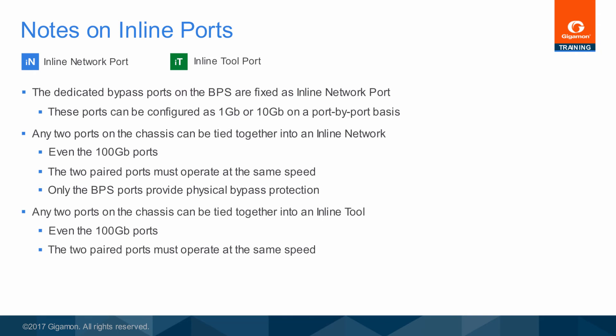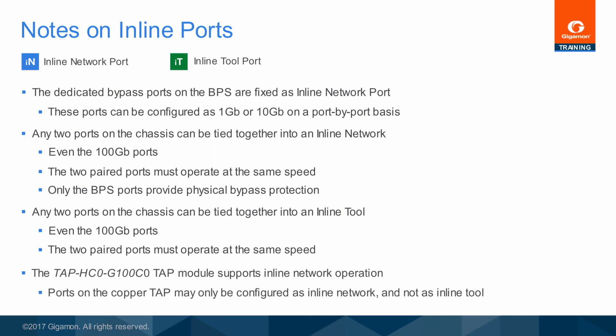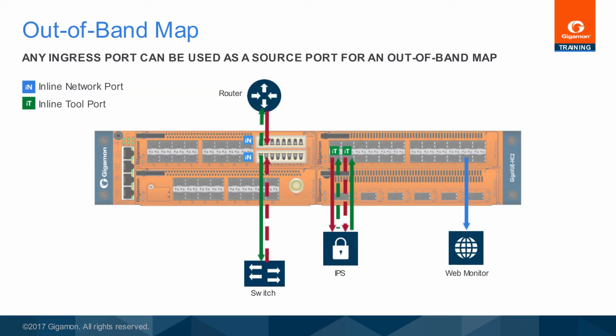Similarly, any two same-speed ports on the same node can be configured as inline tool ports. The copper tap module supports inline bypass operation, but only as protected inline network port pairs and not for inline tools. Any ingress port can be the source of an out-of-band map. Since each inline bypass port is bidirectional, any inline network or inline tool port can also be the traffic source for out-of-band monitoring. Ordinarily the inline network ports are copied for out-of-band monitoring, but choosing one pair over the other lets you select uninspected traffic before it goes to the IPS, or inspected traffic after it has been allowed by the IPS. You can verify inline tool performance.